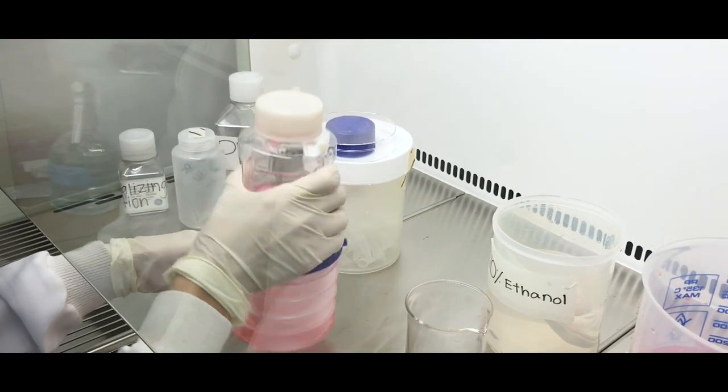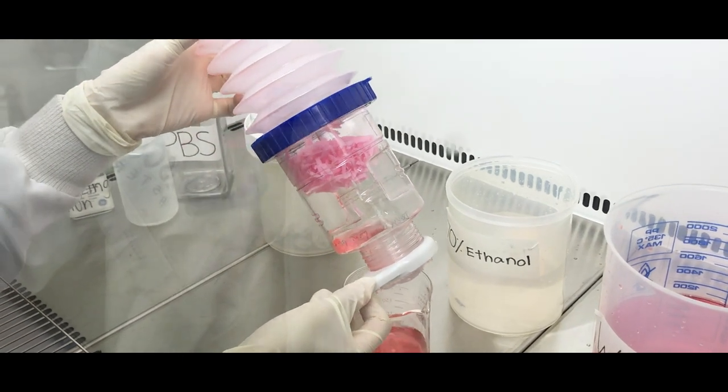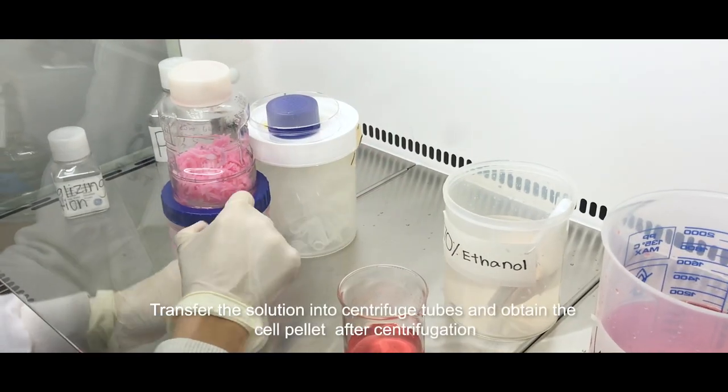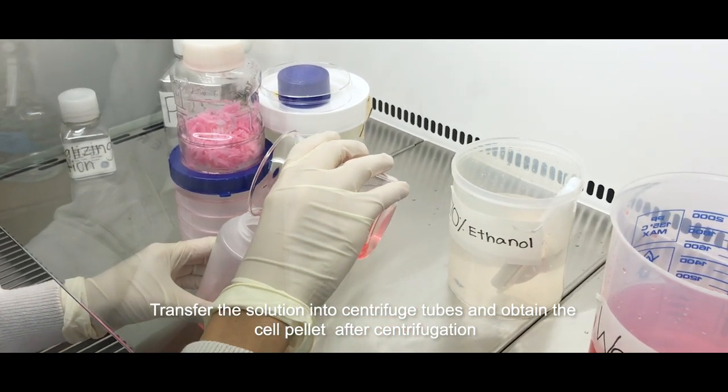Pour the cell laden solution into a clean beaker. Finally, transfer the solution from the beaker to the centrifuge tube to spin down the cells. Obtain the cell pellet after centrifugation.